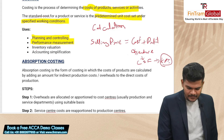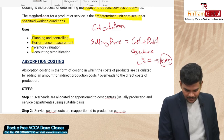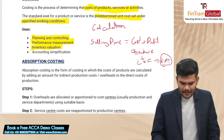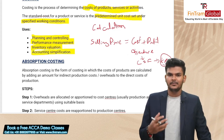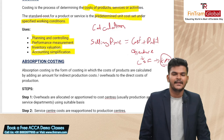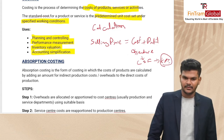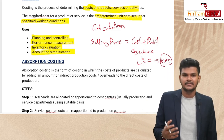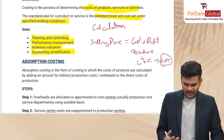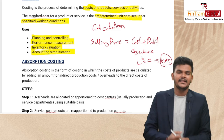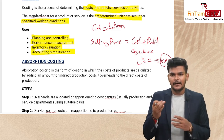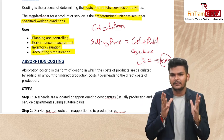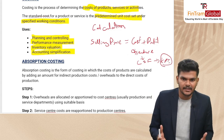The next use is inventory valuation. If we can determine a cost for our product, then valuing inventory becomes easier, and accounting can also be simplified. So costing is basically a simple concept — determining the cost of certain products, services, or activities — and its uses involve planning and controlling activities, performance measurement, and inventory valuation and accounting simplification.